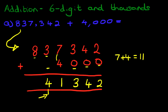As for the hundred thousands, we've got eight, added to zero is eight. And we have our answer: eight hundred and forty one thousand three hundred and forty-two. That is correct. And it's as simple as that. The addition of six digit numbers and thousands.